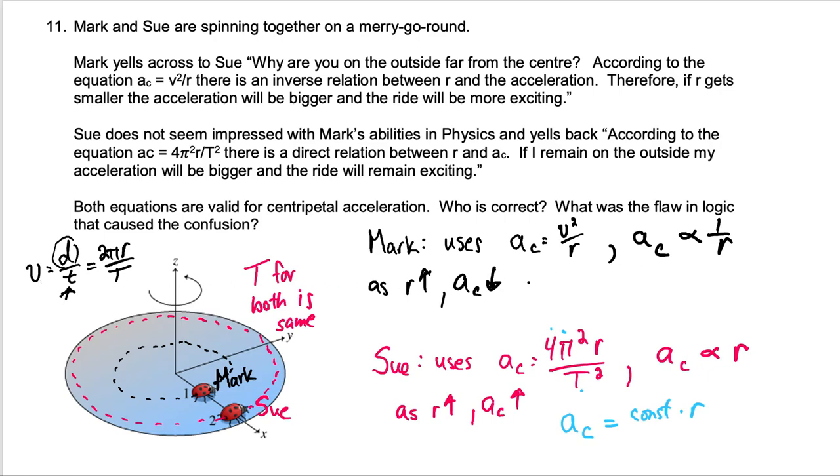So what Mark said is actually incorrect because even though he's right about the relationship between a_c and r, as r goes up a_c goes down according to that formula, the other thing he's not considering is that as r goes up, as the circle gets bigger, the velocity also gets bigger.